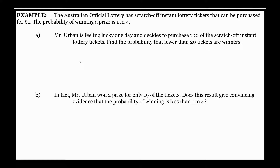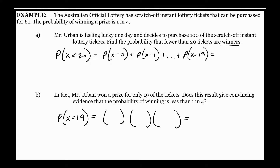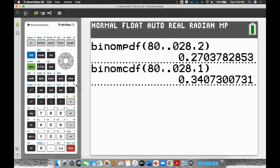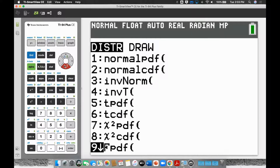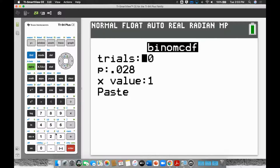Let's do this next one — it's very similar to the one you just did. Australian official lottery: the chances of winning are one in four. Mr. Urban is feeling lucky and decides to purchase 100 scratch-off instant tickets. Find the probability that fewer than 20 win — so that's 0, 1, 2, 3, 4, all of them up to 19. That's a CDF question. Number of trials is 100, probability of success is 25%.